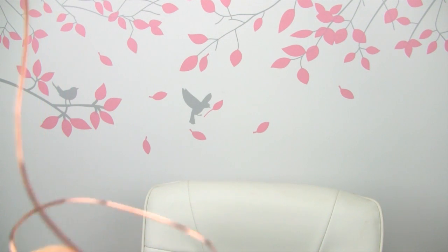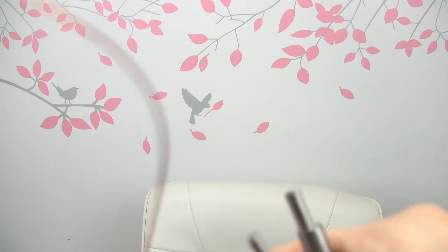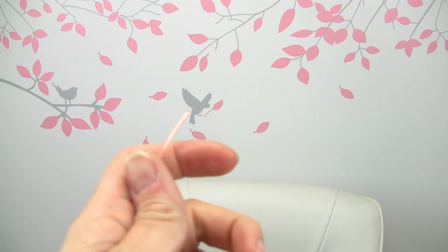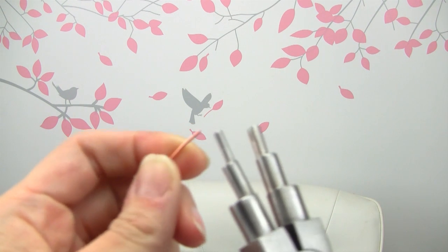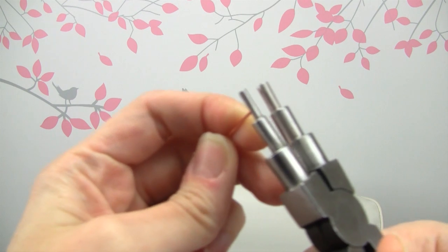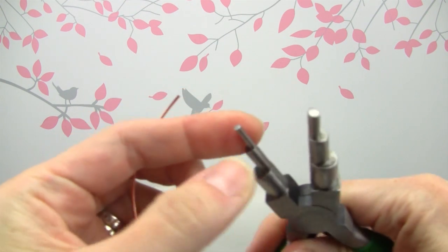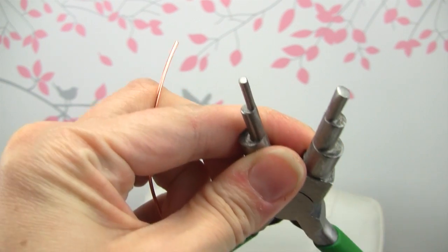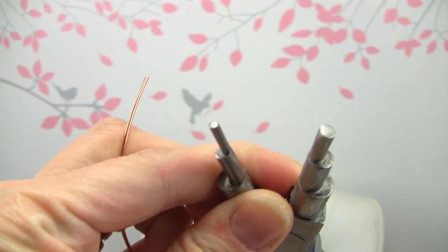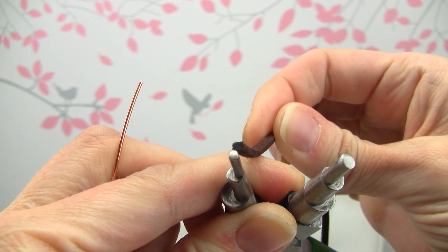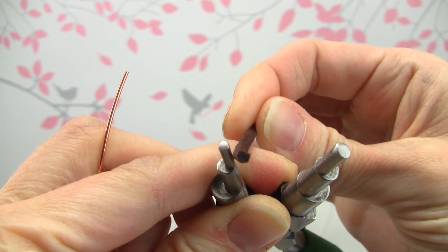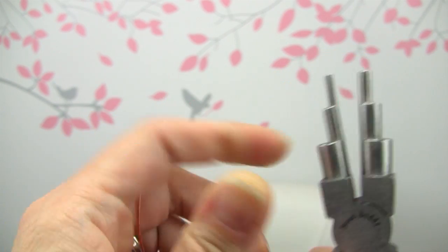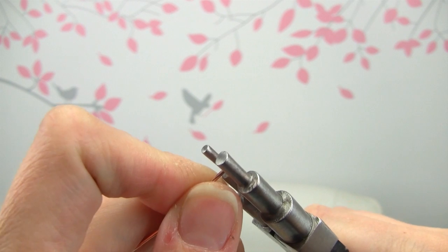So I am going to start by taking my 18 gauge wire. And using this tool here to wrap it, I'm going to use the smallest one here. It's pretty tiny and it depends on the size of your cord. My cord is not super thin, but this is kind of what it looks like. The smaller one works best for me for that type of cord that I use.